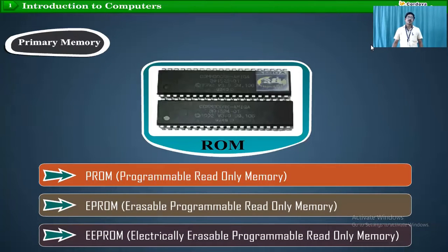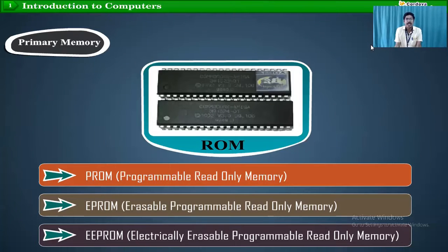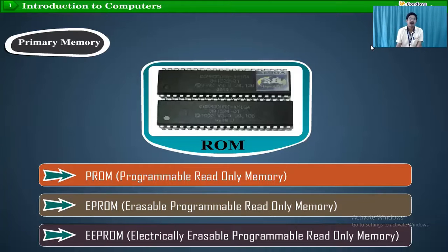To recap: PROM is programmable read-only memory, EPROM is erasable programmable read-only memory, and EEPROM is electrically erasable programmable read-only memory. These three types of ROMs are available, and all of these are primary memory in a computer.